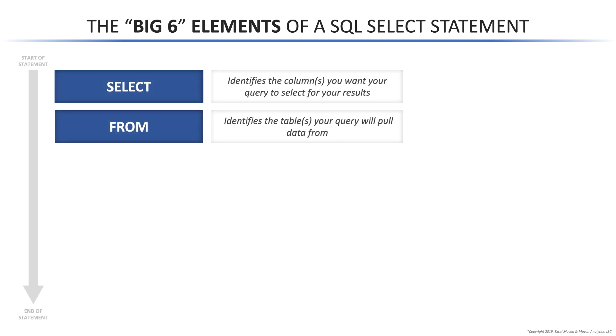First, we have SELECT and FROM. SELECT is where you identify the columns that you want to pull into your results, and FROM is where you identify the table from which to pull those columns. The syntax looks just like this.